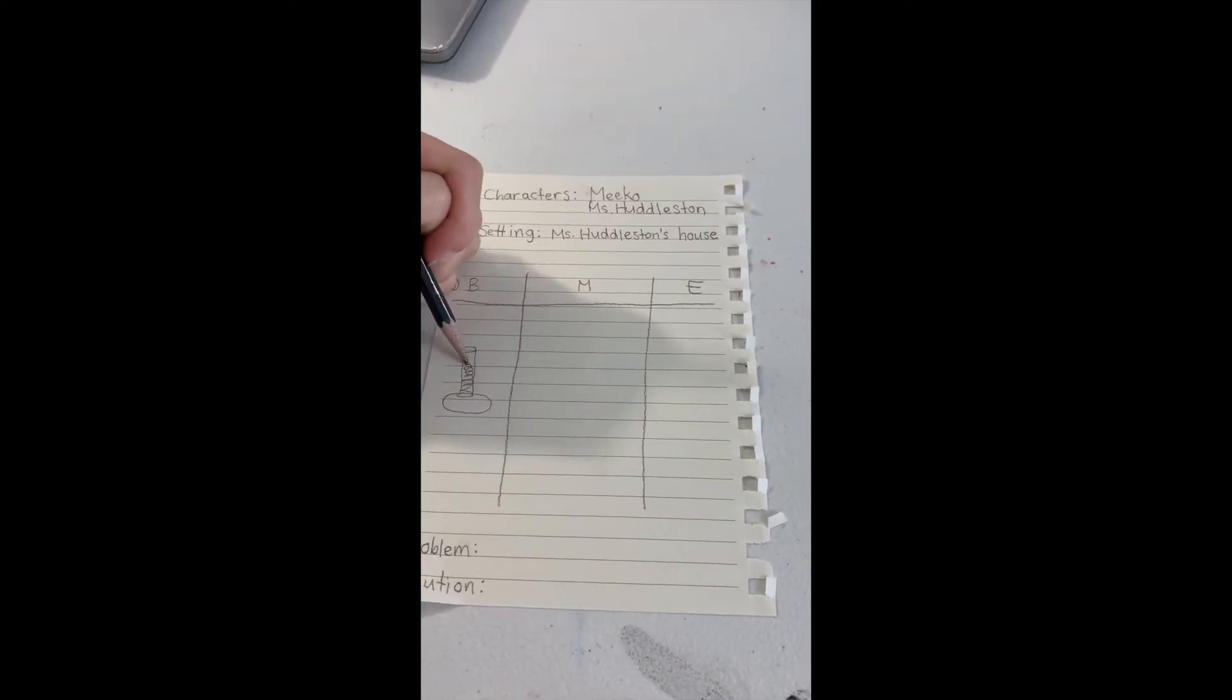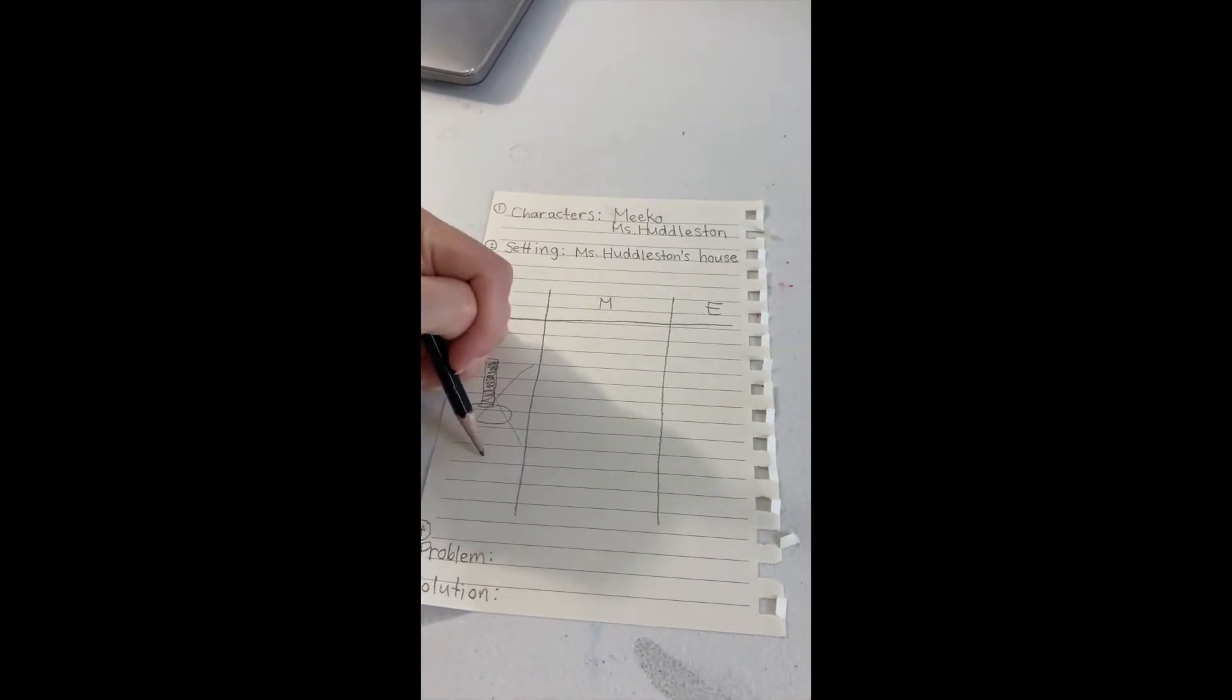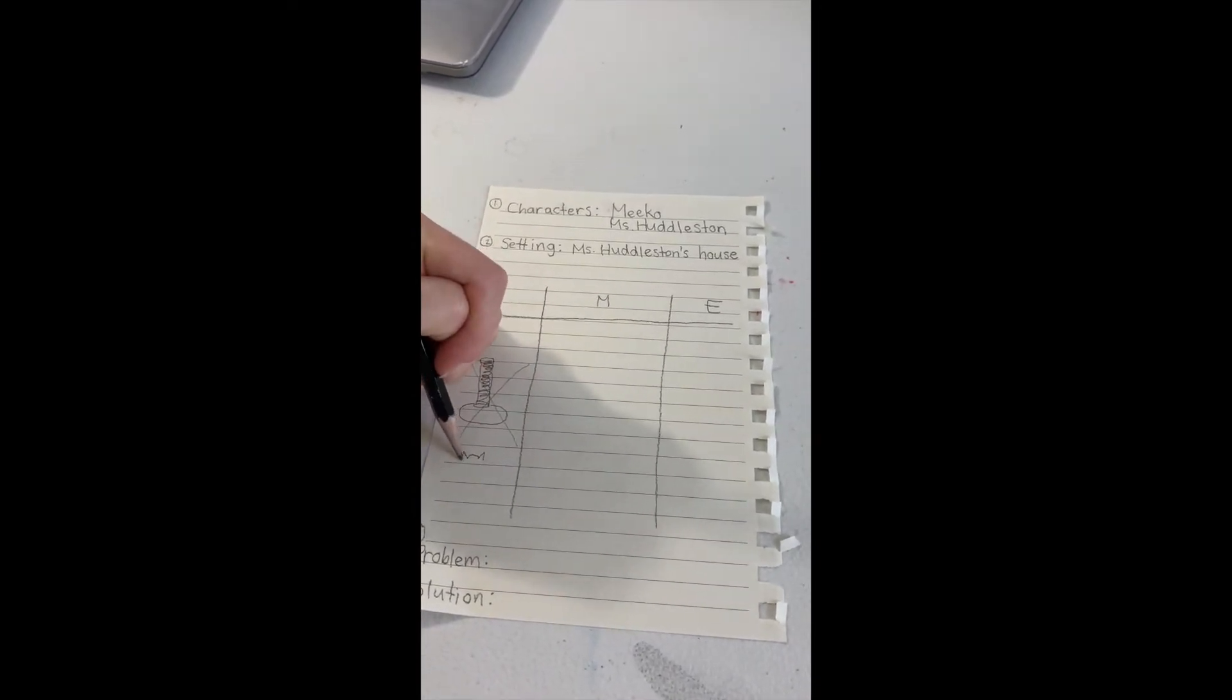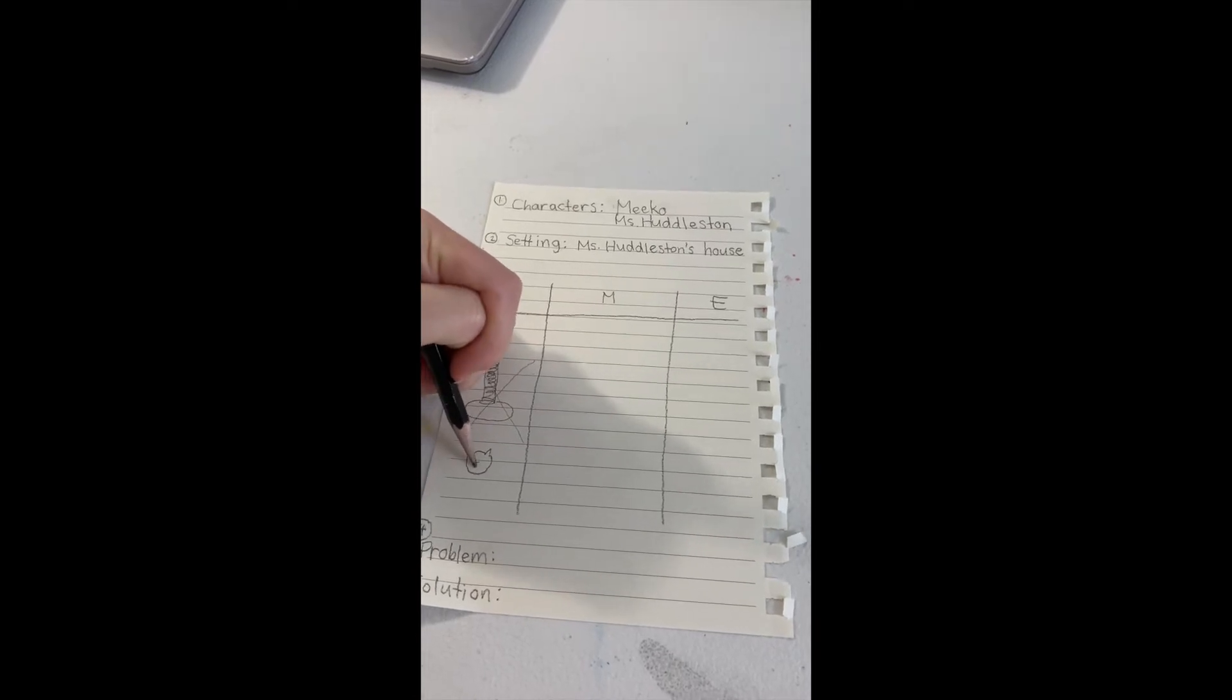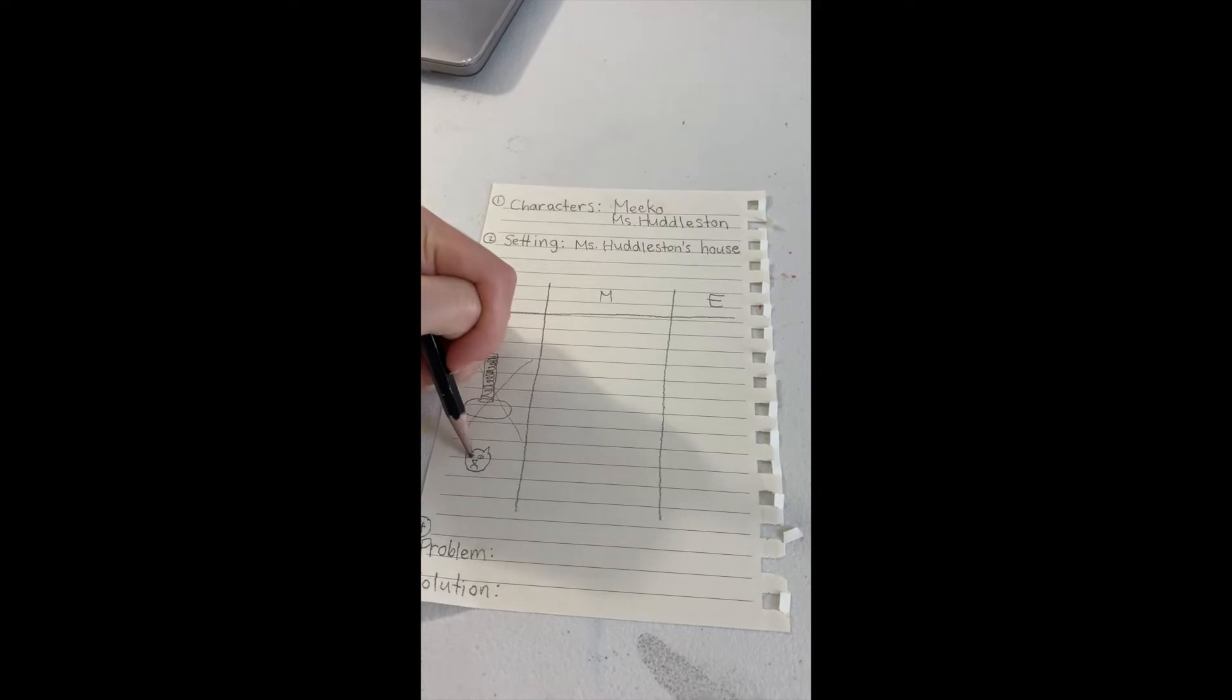This story is about Miko's scratching post and how he broke it. So, I'm drawing a picture of the scratching post. I'm putting an X to show it's broken, and I'm drawing a picture of Miko with a sad face because he is so sad that it is broken.